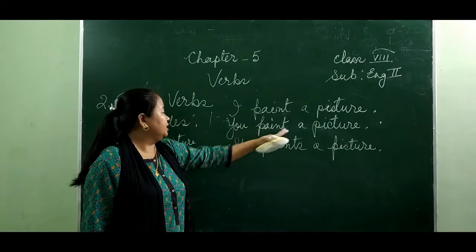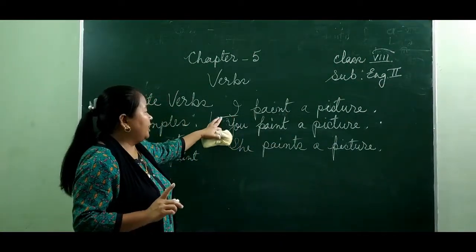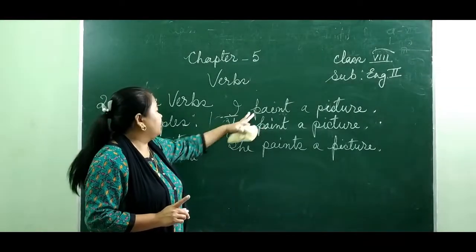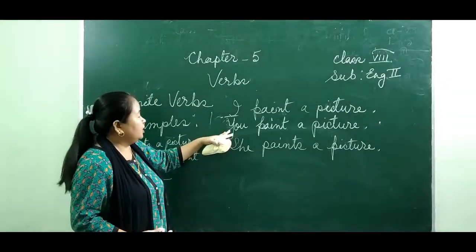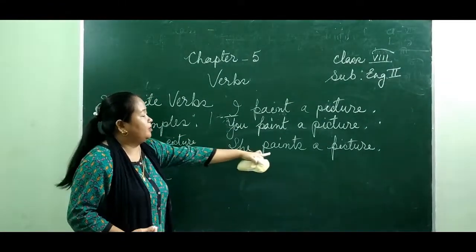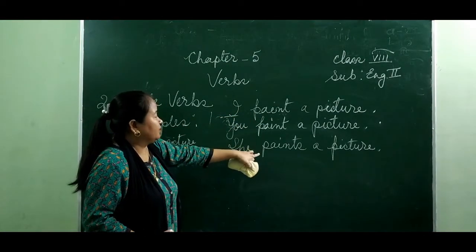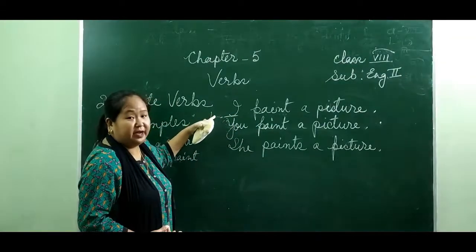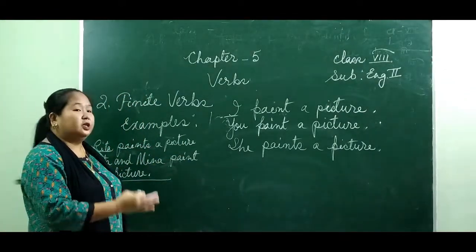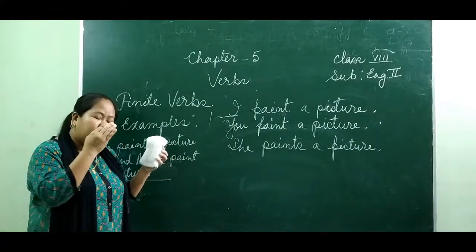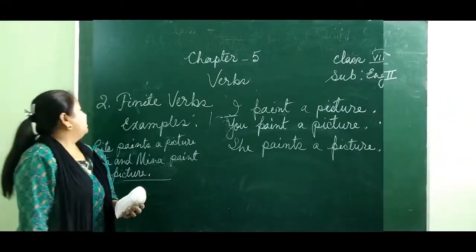Another example: 'I paint a picture,' 'You paint a picture,' 'She paints a picture.' 'I' is first person singular number — the verb is 'paint.' 'You' is second person, always considered plural — so it takes the plural verb 'paint.' 'She' is third person singular number — the verb is 'paints.' So the verb changes according to the person during the action: first person, second person, third person. Finite verbs change according to time of action, number, and person.